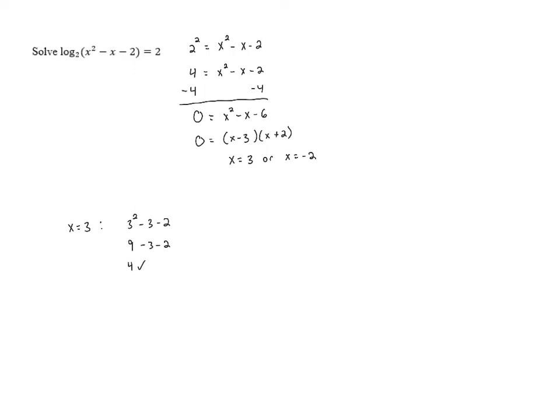Then we'll try x equals negative 2. When we do that, we've got negative 2 squared minus negative 2 minus 2. Negative 2 squared is 4. And when we subtract a negative, it's the same as adding. So we've got 4 plus 2 minus 2, which gives us 4. Again, this is positive, so we don't have any problems with the domain. And these are actual solutions.